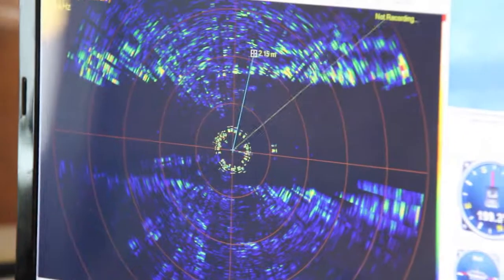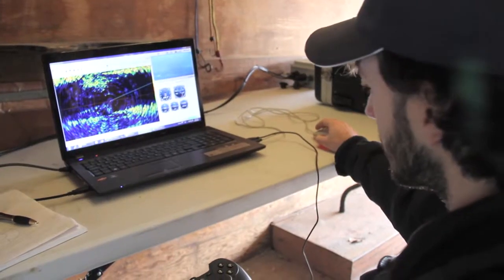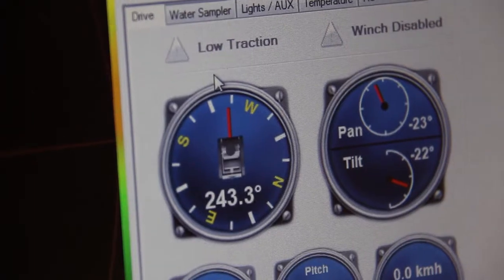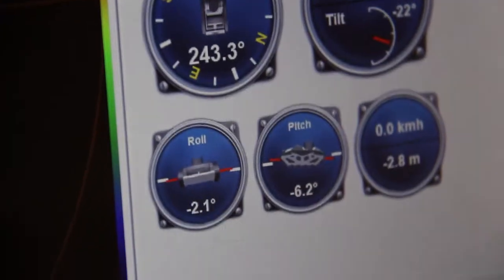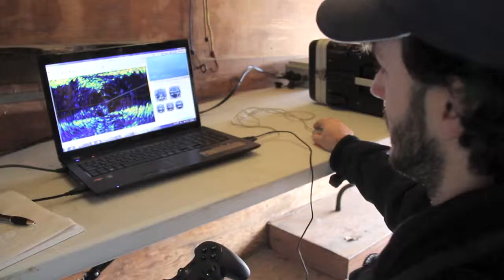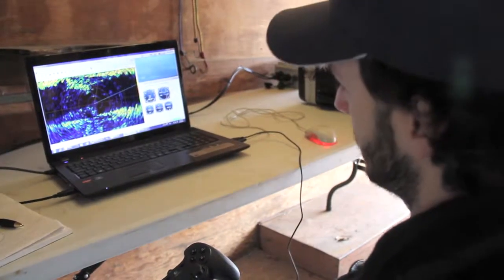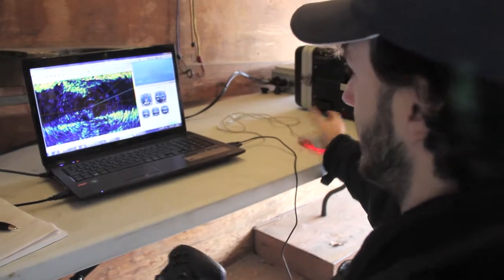On here this is your dashboard. It gives you your heading, your camera, this orientation and then you've got your roll, pitch, sensors and your distance from where you started from.